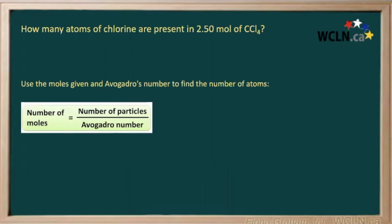So here's our formula we could use. Number of moles is equal to the number of particles divided by Avogadro's number. But we can also use this to find our number of particles, which could be atoms or molecules. We simply multiply our number of moles by Avogadro's number.